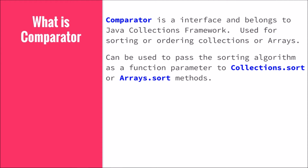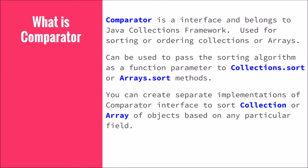A Comparator interface implementation can be passed as a function parameter to Collections.sort or Arrays.sort. Once that is passed, the collection or the array will be sorted and the output will be stored in the same object.